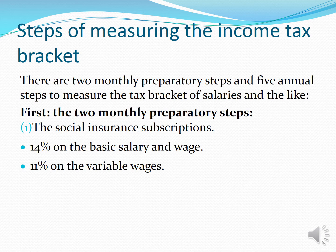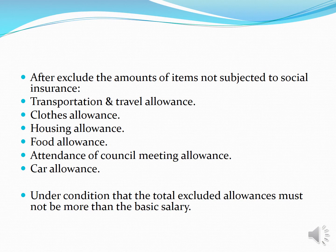Step one: the social insurance subscription. The rate is 14% on the basic salary and wage, and 11% on the variable wages, after excluding amounts not subjected to social insurance — for example, transportation and travel allowance, clothes allowance, housing allowance, food allowance, attendance of council meeting allowance, car allowances — all such allowances are set to zero. Under the condition that the total excluded allowances must not be more than the basic salary.